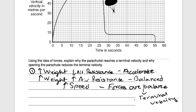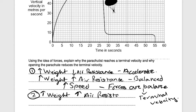This is the constant velocity the skydiver travels at. When the parachutist opens the parachute, the weight stays the same but air resistance increases even more. Air resistance becomes greater than weight, so the speed decreases — the forces are unbalanced and the skydiver decelerates.